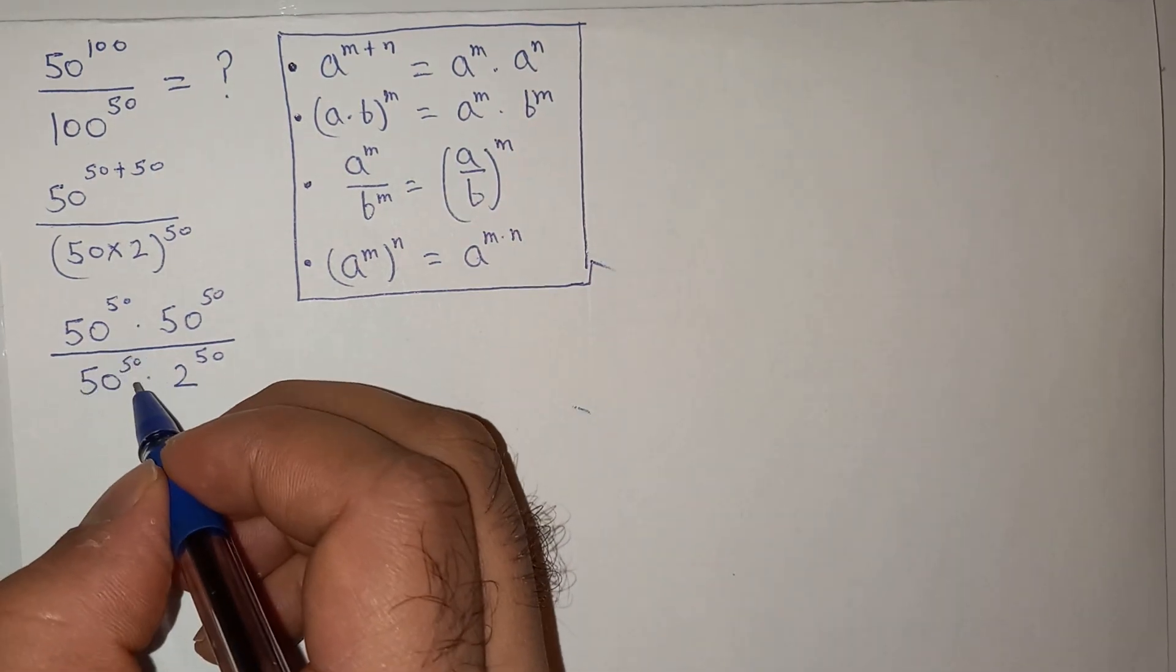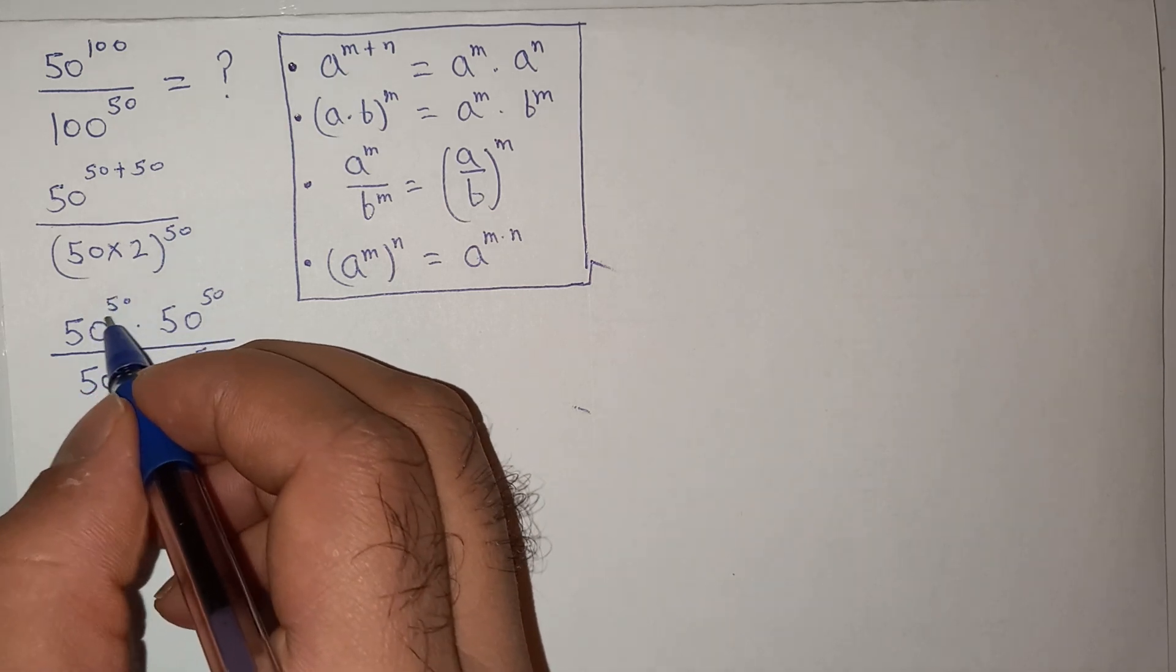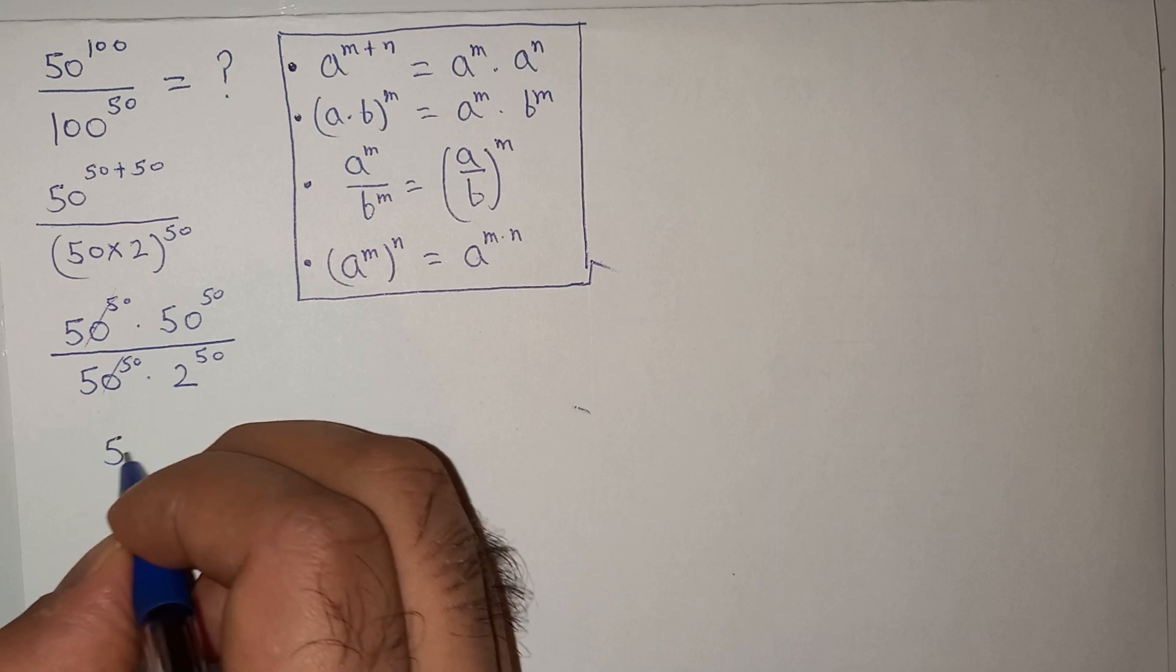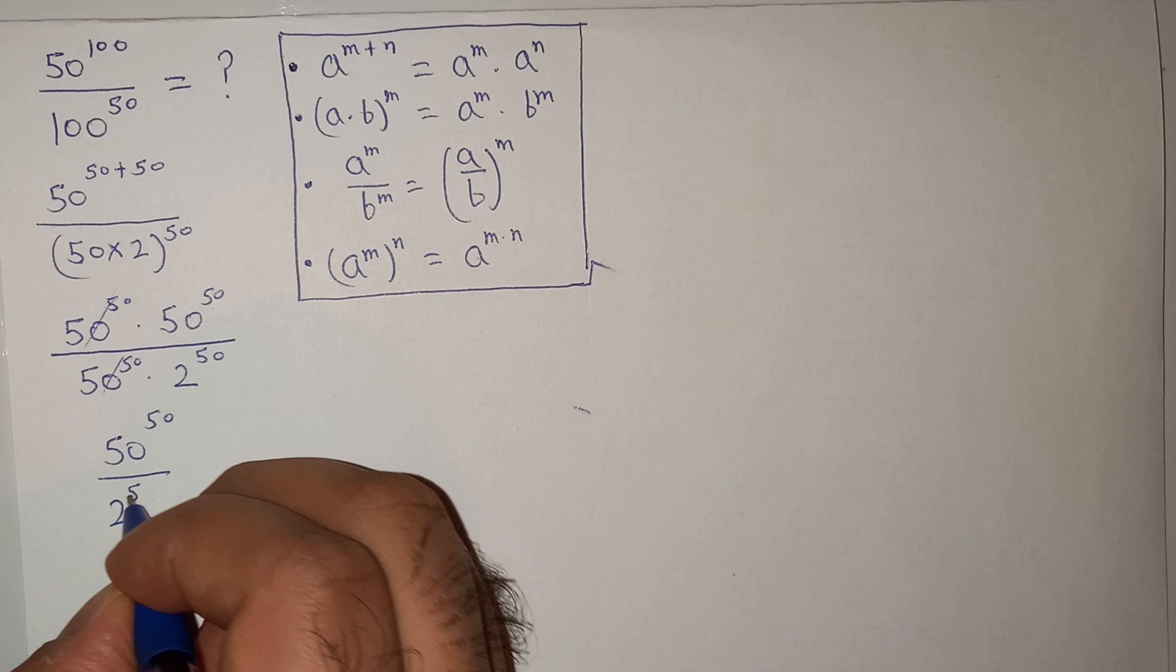Alright, so you see that 50 power 50 is in the numerator and denominator so we can cancel this. So we are left with 50 power 50 divided by 2 power 50.